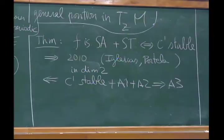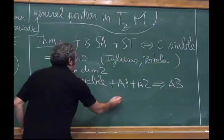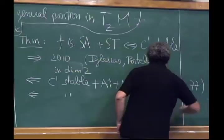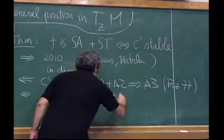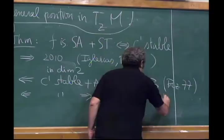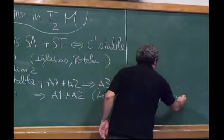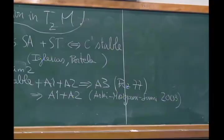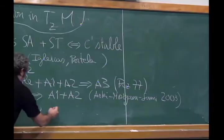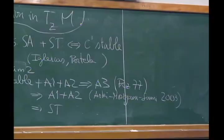This was done in 1977 by Shittiski, very ancient, before the proof by Mañé of the stability conjecture. C1 stability implies A1 plus A2 was proved by Aoki, Moriyasu, and Sumi in 2003. The strong transversality implication is easier and was done in the same article.